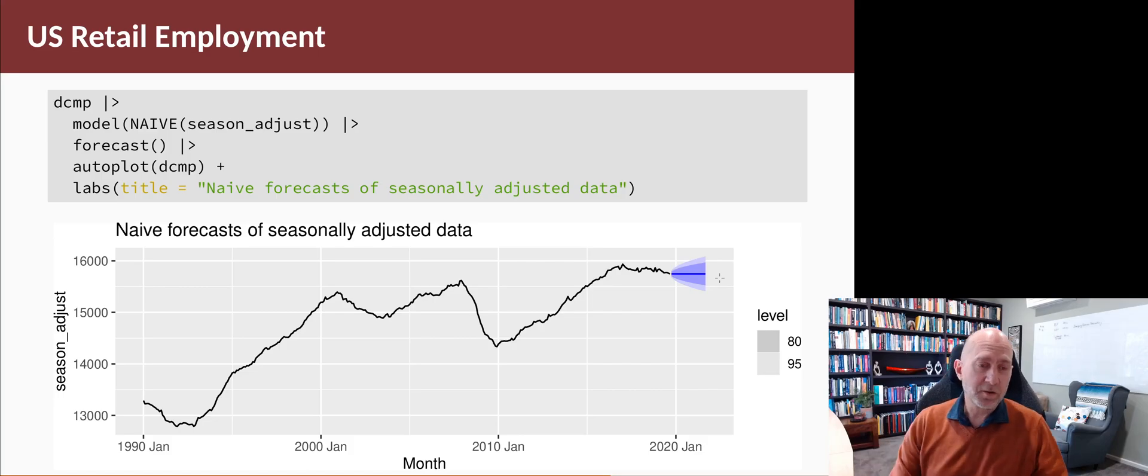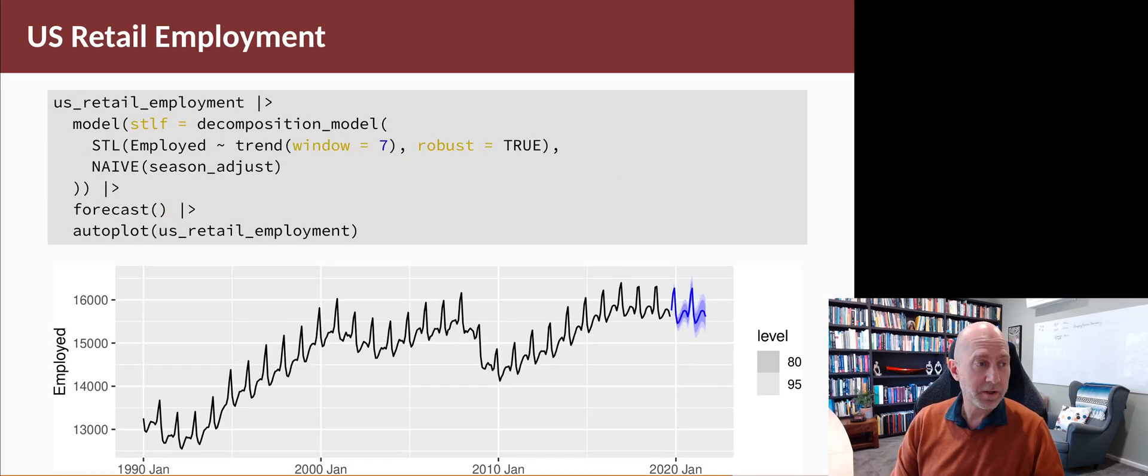The seasonal component will forecast using seasonal naive, and then we add the two things together. Now, a simple way to do this is to do it all in one step. We take the original dataset before we did anything to it, pipe that into model, and then use a new function, which is the decomposition_model function.